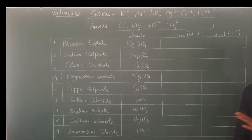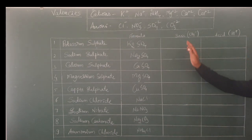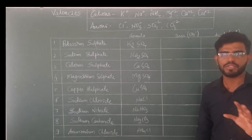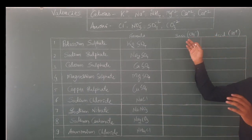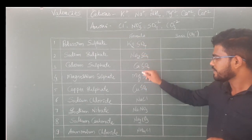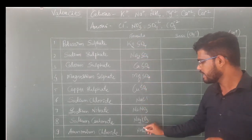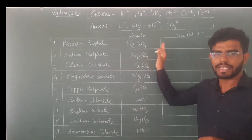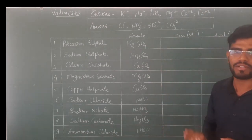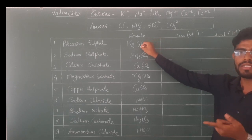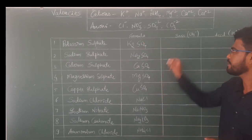All bases contain OH⁻ and all acids contain H⁺. Without those, we do not know any acid or base at this level. So we use this trick: every salt name contains two components — a positive part (the metallic cation) and a negative part (the non-metallic anion). You combine the first part with OH⁻ to get the base, and the second part with H⁺ to get the acid.